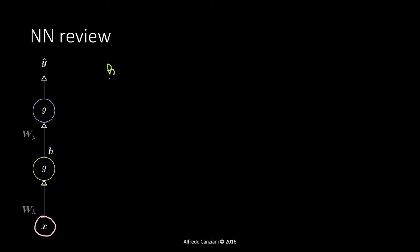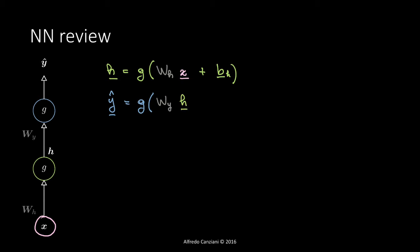We can write that the vector h is equal to our nonlinear function g applied to the affine transformation of x. So we have Wh multiplying the input vector x, plus the bias vector for the h activation. Then we have our prediction y-hat, which is again a nonlinear function of the product of Wy with our h, plus the bias vector for the y term.